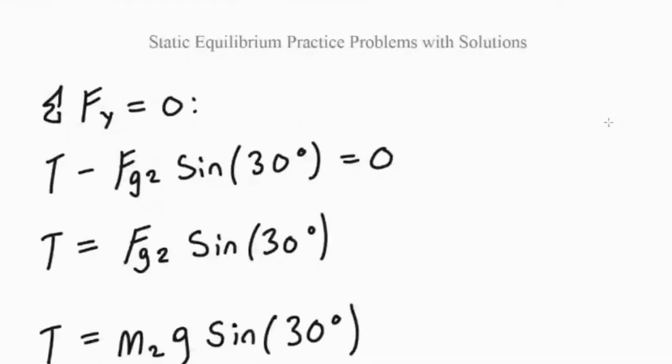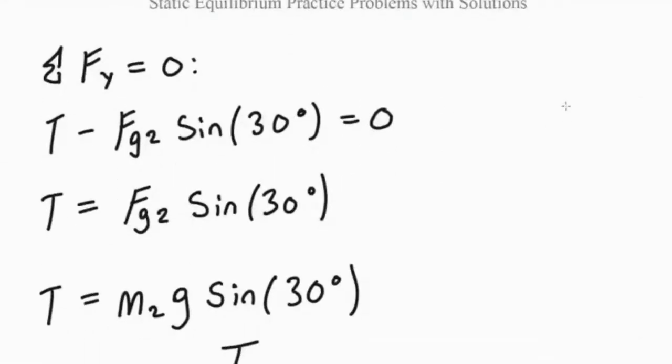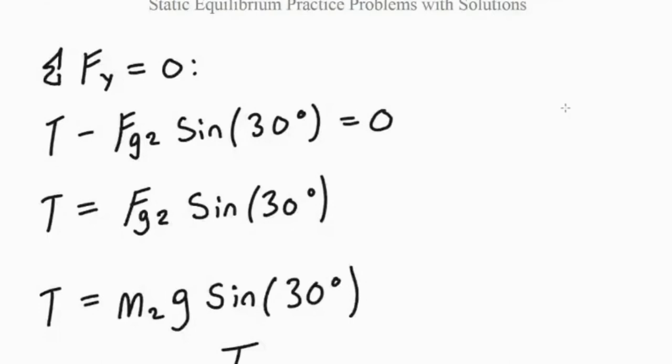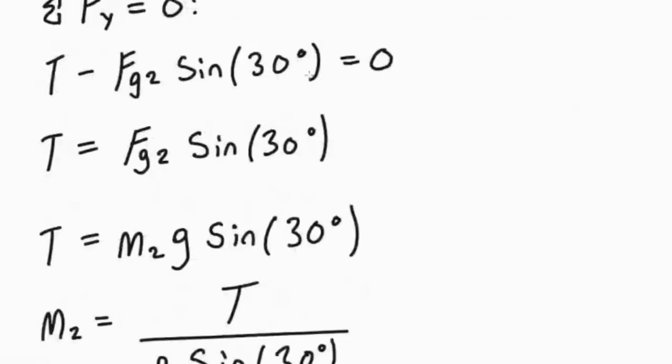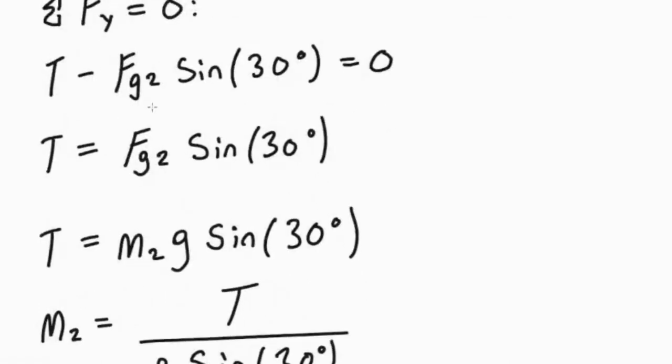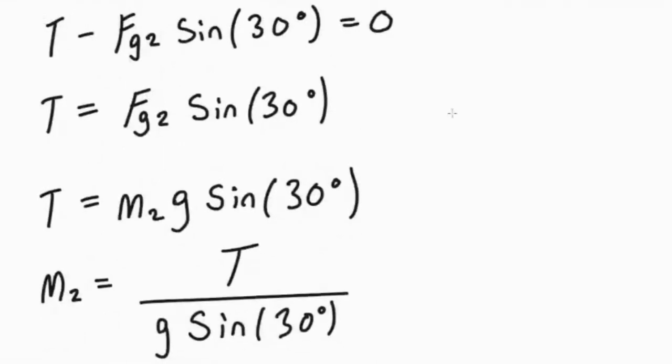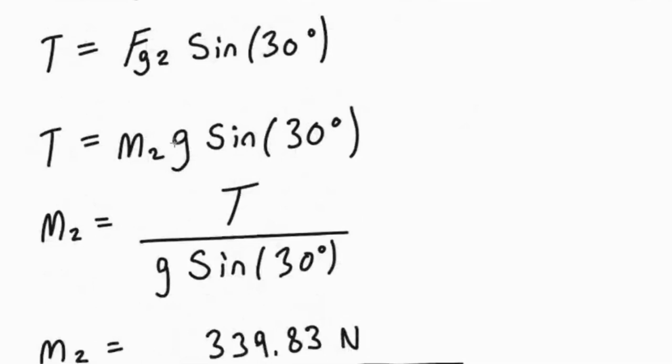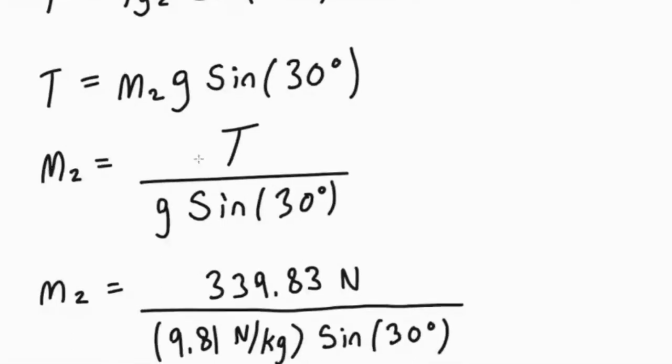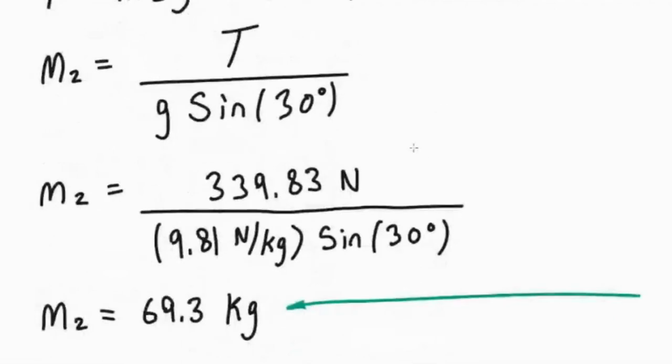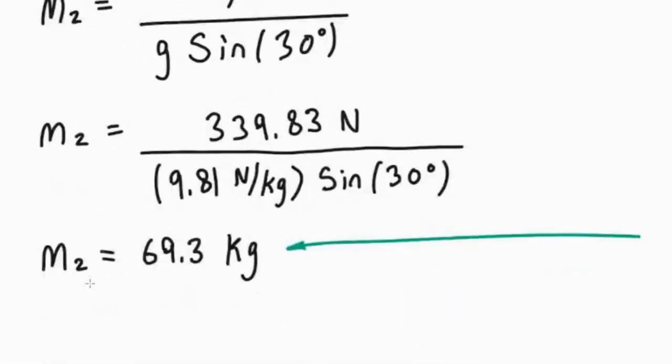So if we write our sum of forces in the Y direction, we'll get tension minus FG2 sine 30 is equal to zero. We can bring the force of gravity term over the right-hand side, replace that with M times G. And now we know the tension and we want to find the mass, so we can bring G sine 30 over to the other side. So we'll end up with M2 is equal to tension divided by G sine 30. Now we can plug in that value for the tension that we found and get our mass as 69.3 kilograms.